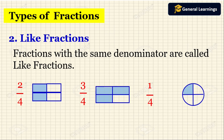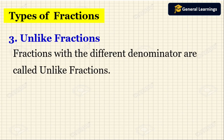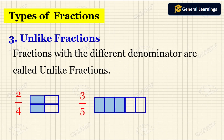Next one is unlike fractions. Fractions with different denominators are called unlike fractions. If the denominators are different, that fraction will be called an unlike fraction. Unlike fractions means if the denominators are different, those fractions will be called unlike fractions.